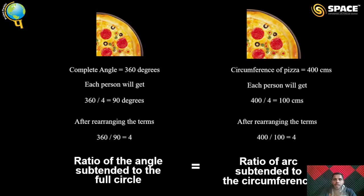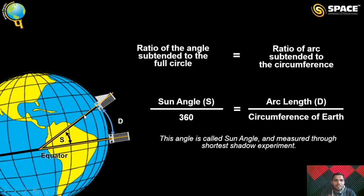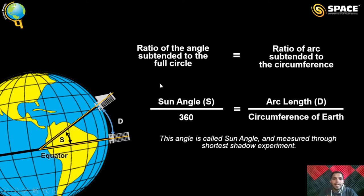We use this same principle for Earth. There are two places at distance D that make an angle S to the center of the Earth. The ratio of the sun angle to 360 degrees is equal to the arc length D divided by the circumference of Earth. From our Eratosthenes experiment, we need to find two things: the sun angle, and the arc length D.